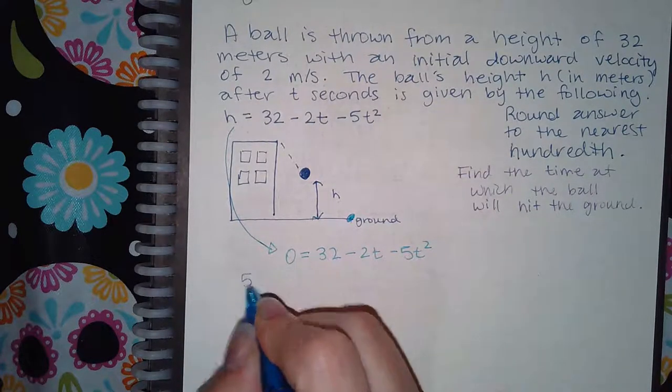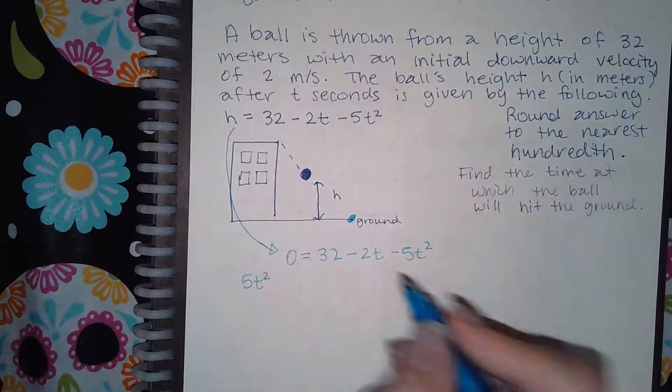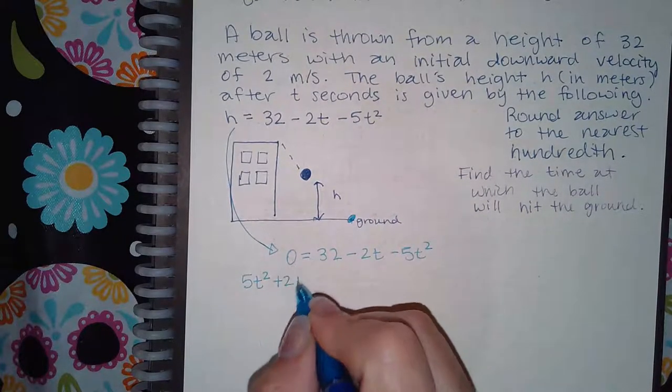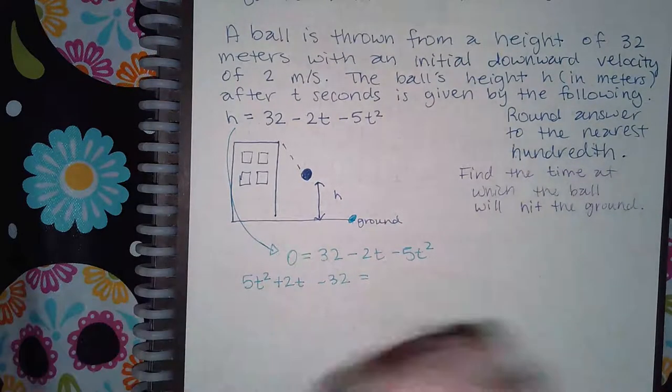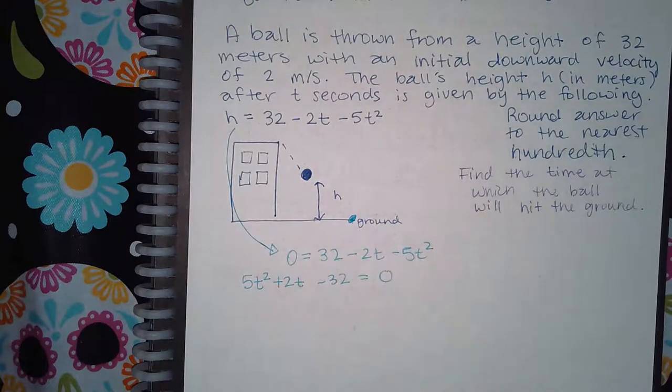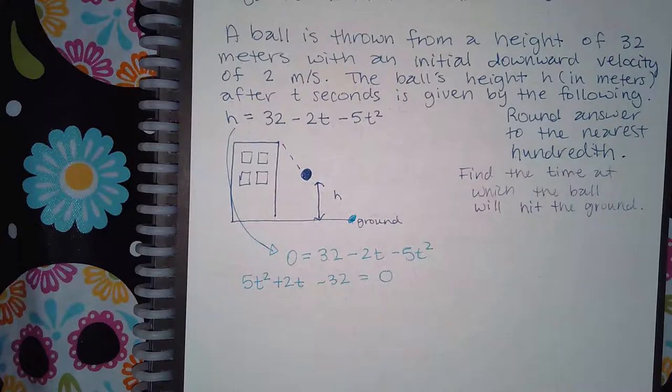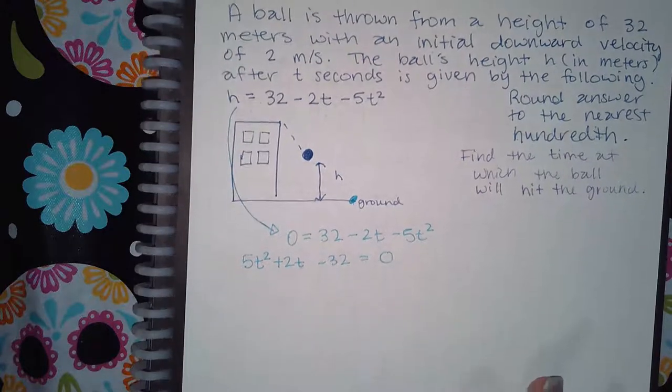If I move this over, this would be 5t squared positive, this would be positive 2t, and this would be negative 32. Since everything moved over to the left, there would be nothing left over on the right. Then now I can plug in my formula.